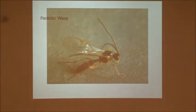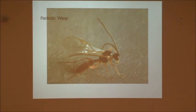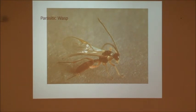Parasitic wasps — an easy example: your tomato hornworm, the big giant nasty green things that chew up tomato plants. If you see all those little white things on top of it, a parasitic wasp has come and laid its eggs inside that worm. Those eggs hatch and eat the worm from the inside out. Parasitic wasps and parasitic flies basically lay their eggs in another insect host and when those eggs hatch it kills the bad insect.